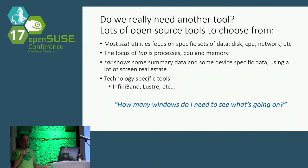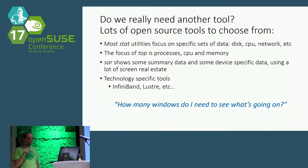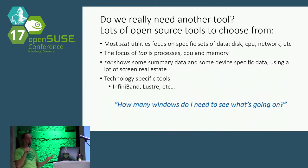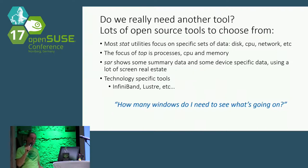I ask the question: do we really need another tool? The problem is there are a lot of tools to choose from. I already mentioned things like top and the stat tools. A lot of the tools focus on different things. Some of them will show summary data of what your system is doing, some will show detailed data. It's not necessarily easy to map from one to the other. Some tools will print timestamps when they report the data; some tools won't support timestamps.